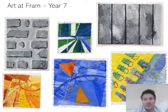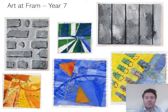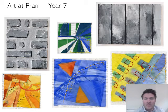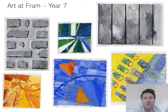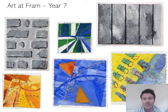In year seven you will do lots of drawing and painting, printmaking, 3D work and also some textiles processes to get you used to the sorts of things that you'll be doing in year eight and nine, and then maybe even in GCSE if you take it in year 10.